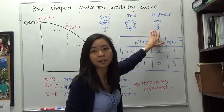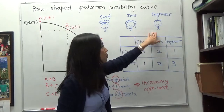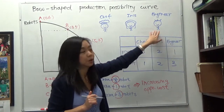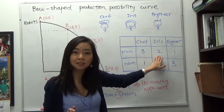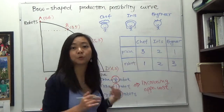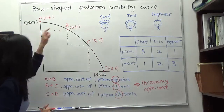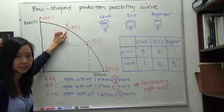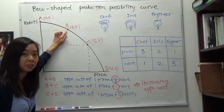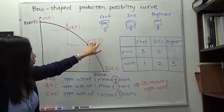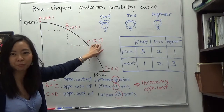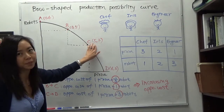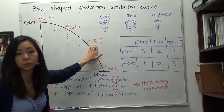At point B we're still a bit hungry and want more pizza. Two workers are still making robots, so we send one more to make pizza. We send Iris, because when it comes to pizza, Iris is better than the engineer. Moving from point B to point C, Iris stops making robots, so the number of robots drops from five to three, and the number of pizzas increases from three to five.